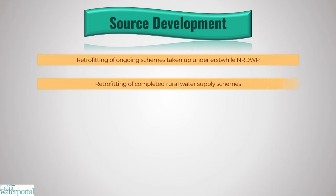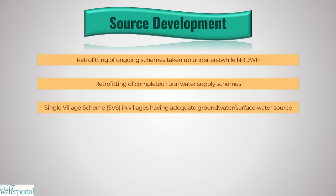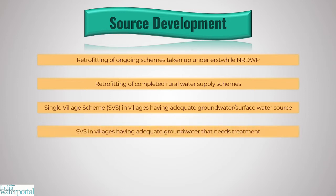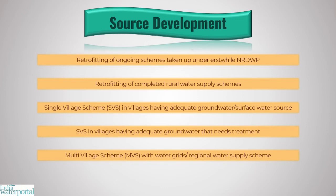Other criteria include: retrofitting of completed rural water supply schemes to make them Jal Jeevan Mission compliant; single village schemes in villages having adequate groundwater, spring water, local or surface water of prescribed quality; single village schemes in villages with adequate groundwater that needs treatment; multi-village schemes with water grids; regional water supply schemes; and mini solar power-based piped water supply in isolated tribal hamlets.